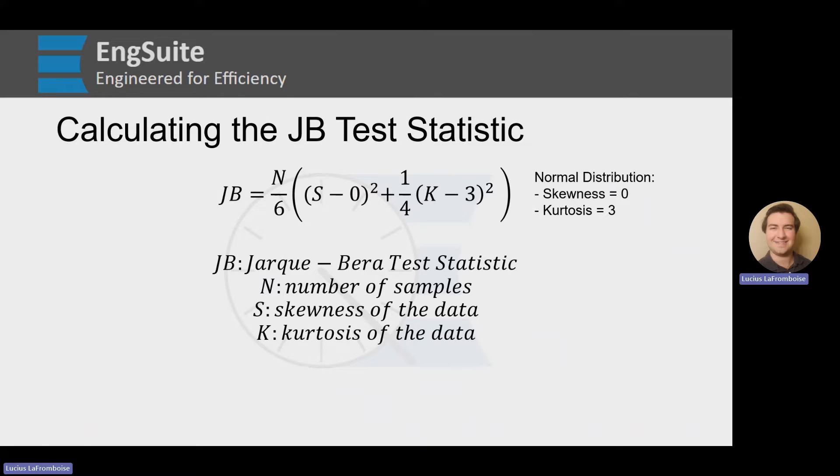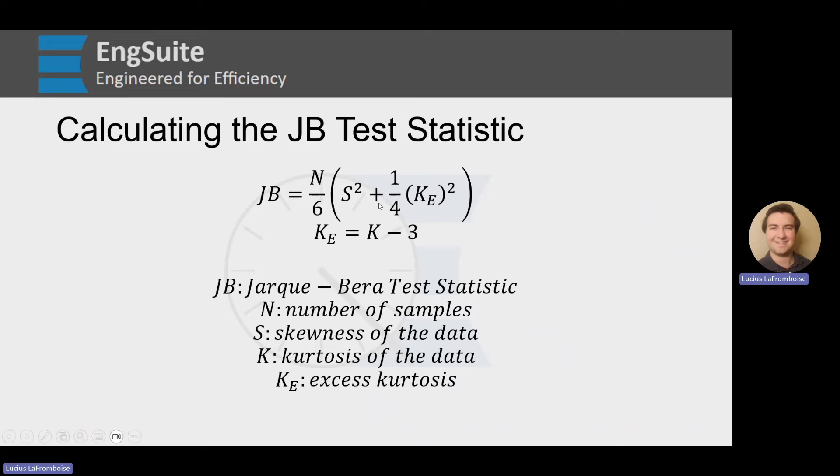But something that we're going to want to do is, because of the way that we're going to be calculating our kurtosis, we're actually going to be calculating the excess kurtosis already. So we're going to substitute that k minus 3 with k sub e, being the excess kurtosis.